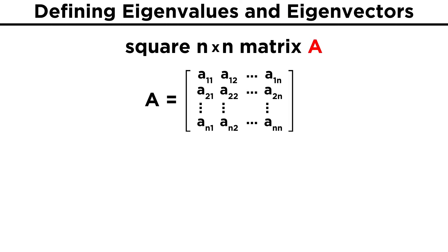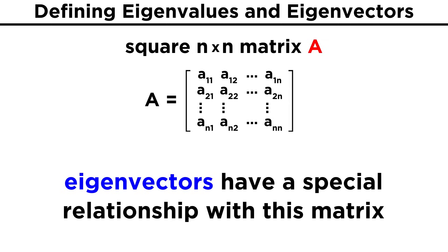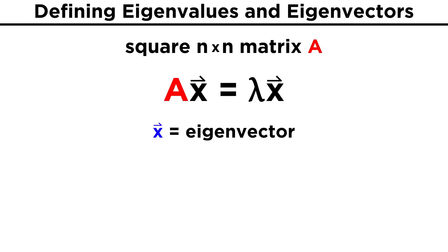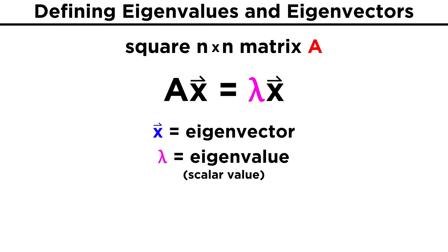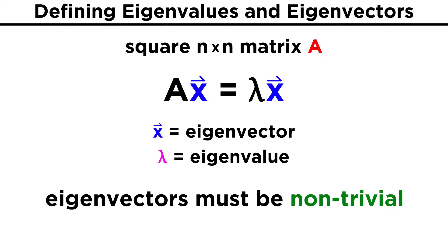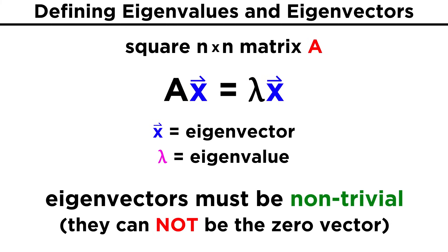Let's say we have matrix A, a square n by n matrix. Eigenvectors are vectors that have a special relationship with matrix A, such that when you multiply A times the eigenvector X, you get back that same vector multiplied by a scalar lambda. These scalars are called eigenvalues, or sometimes characteristic values. In addition, these eigenvectors must be non-trivial, meaning that they are not just the zero vector.